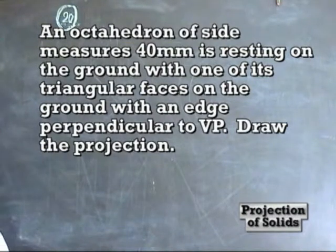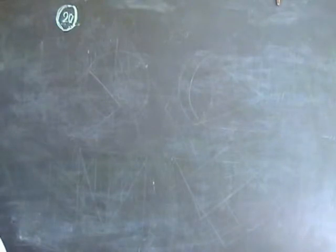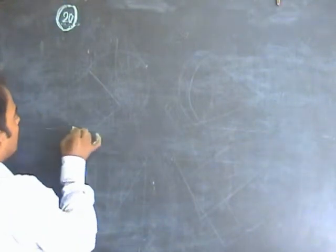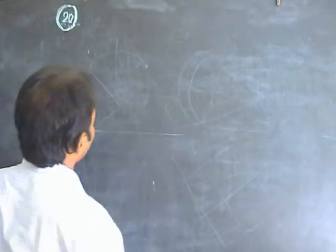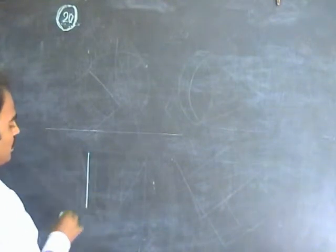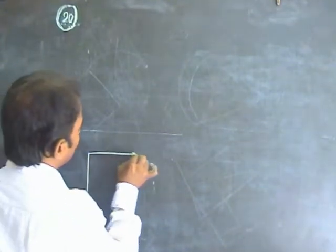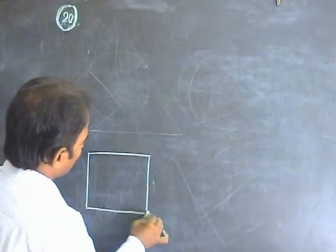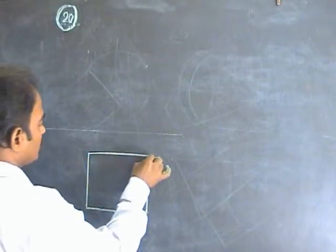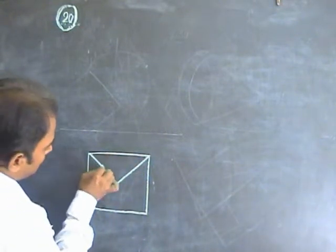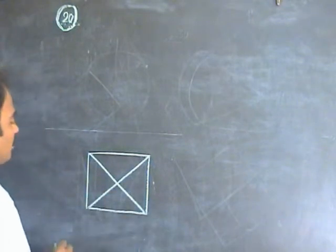We take the octahedron on the ground; the base side is given as 40 m. Draw the top view of the octahedron. The top view of the octahedron in this position is a square. Draw a square with a 40 m base side. This is the top view of the octahedron.